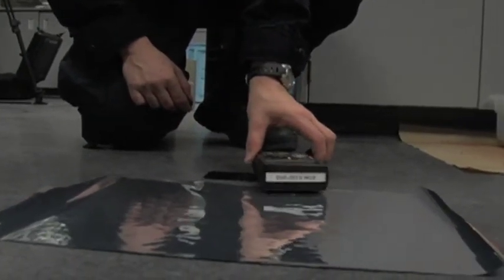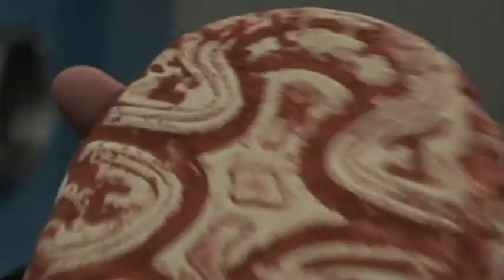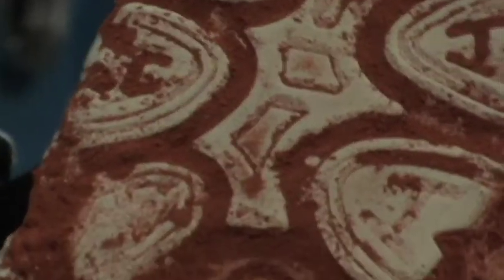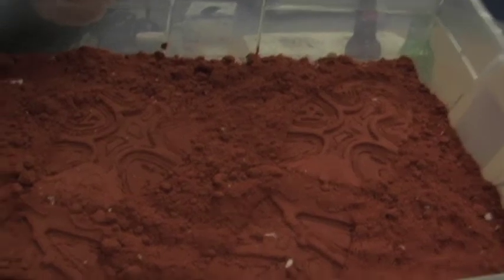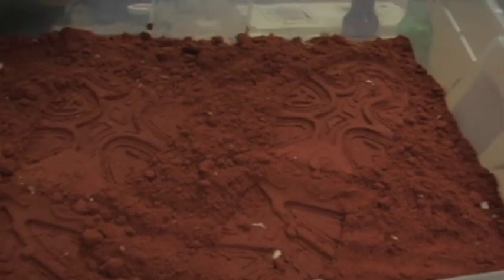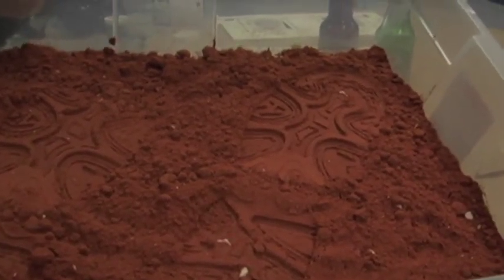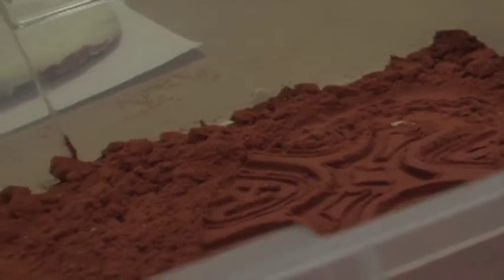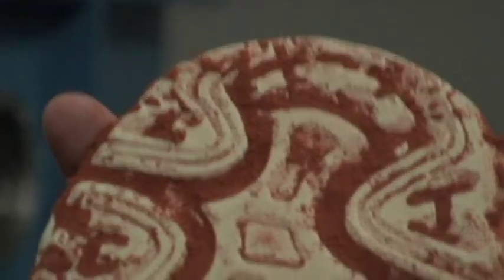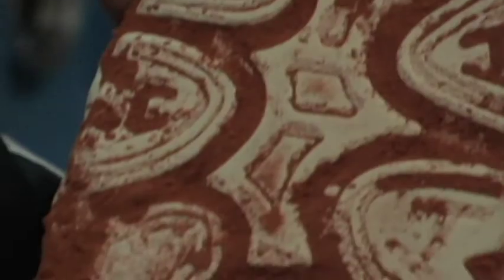What we will also do is we will use dental stone to make a cast of a footwear impression found at a scene. And simply by mixing up the dental stone and pouring it into a footwear impression found at a scene, we can make a mold, a three-dimensional mold of a footwear impression.